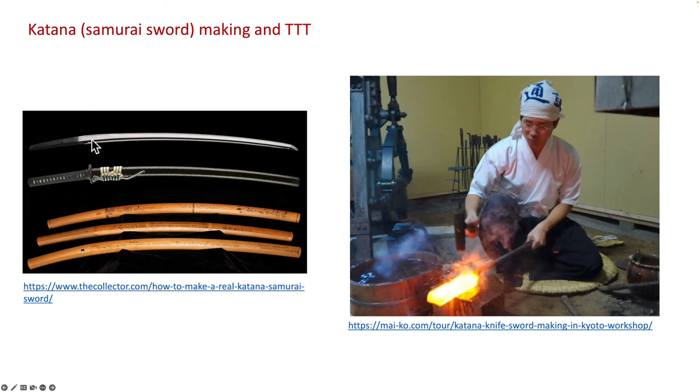We also know that the unit volume of martensite is larger than bainite and pearlite, and that gives you the natural bending of the sword and the beautiful curvature. This is how the ancient blacksmith utilizes the TTT diagram to engineer steel with strong and hard edge and tough sword body.